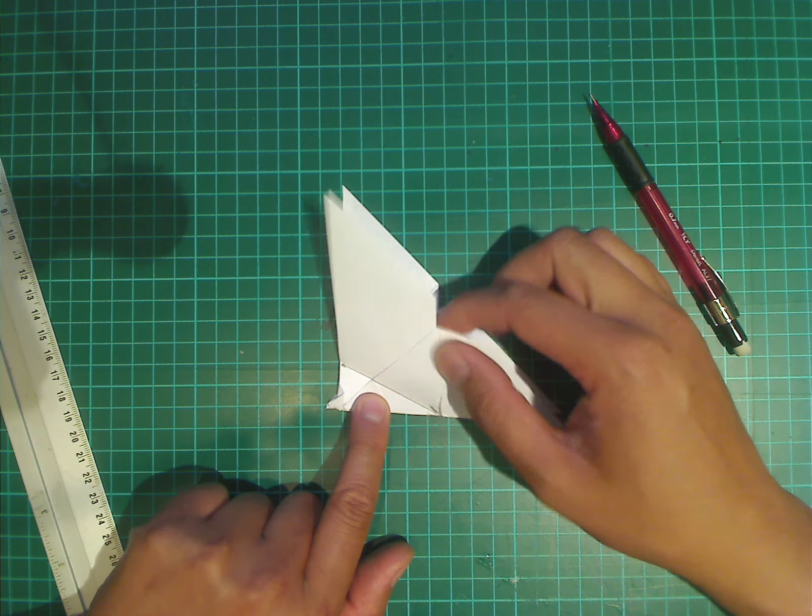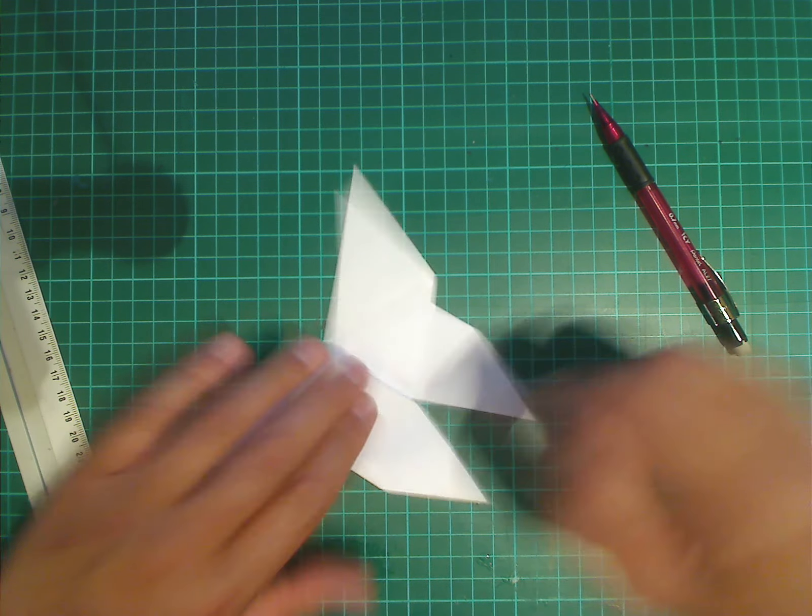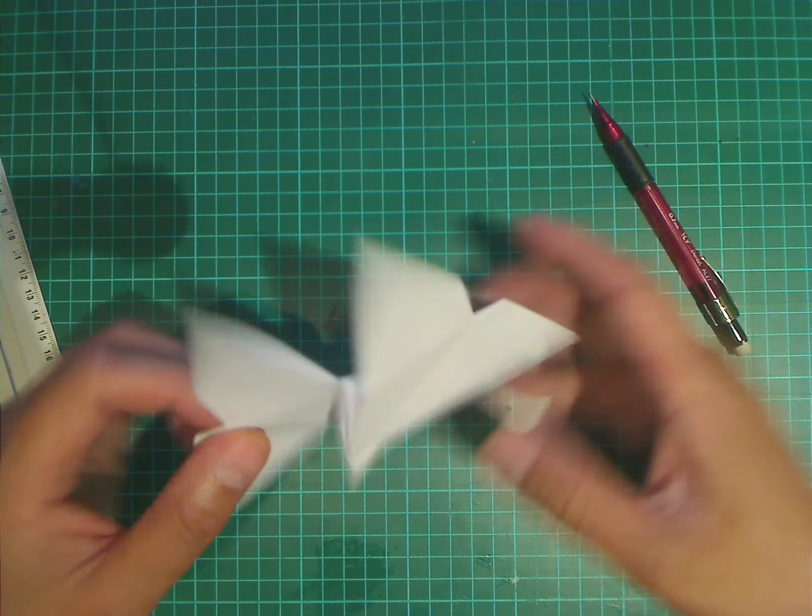Again, I'm going to repeat that. You're going to fold it across here. Like so. And then you're going to do the same thing on the other side. So if you flip the middle over.